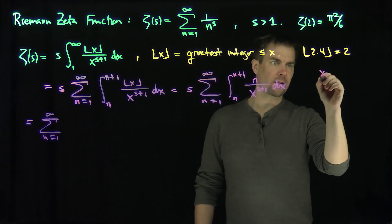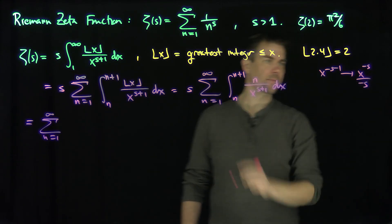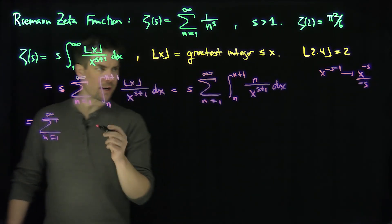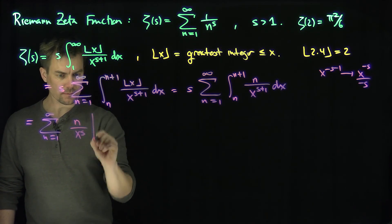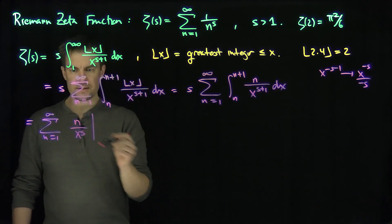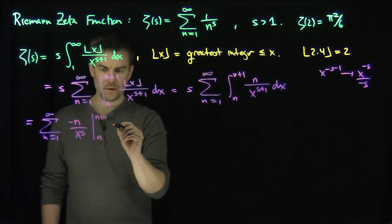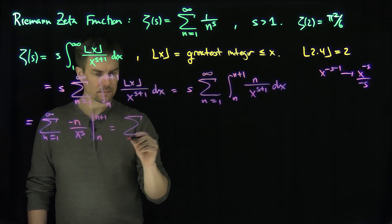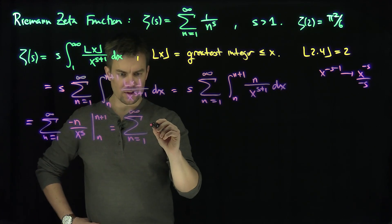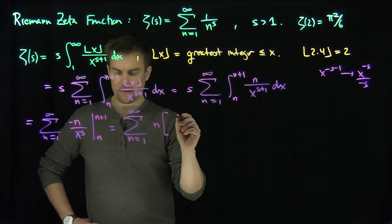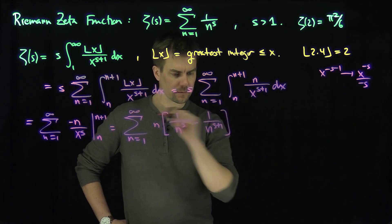We evaluate these integrals. Writing x to the negative s minus 1 and integrating gives x to the negative s over negative s, so the s's cancel. Each integral becomes negative n over x to the s, evaluated from n to n plus 1. Flipping the limits, this gives the sum from n equals 1 to infinity of n times 1 over n to the s minus 1 over n plus 1 to the s.